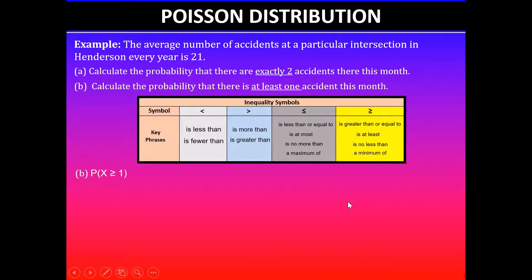Using this information we can write that the probability random variable X is greater than or equal to one. What this means is we're looking at discrete values and it starts with zero.